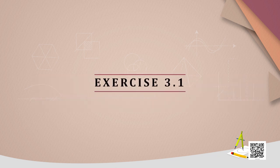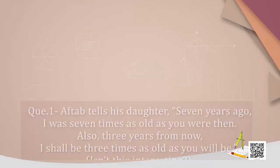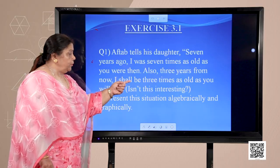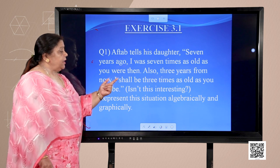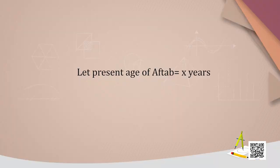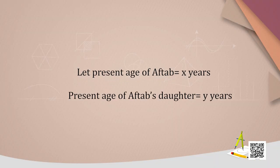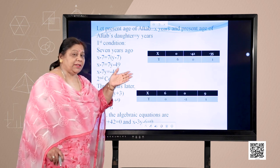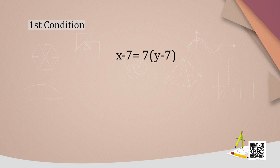Let us start with Exercise 3.1. The first question says: Aftar tells his daughter, 'Seven years ago, I was seven times as old as you were then. Also, three years from now, I shall be three times as old as you will be. Represent this situation algebraically and graphically.' Let the present age of Aftar be X years and his daughter's age be Y years. The first condition gives: X − 7 = 7(Y − 7), which simplifies to X − 7Y = −42.